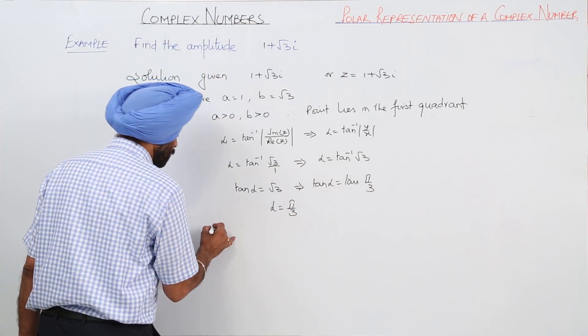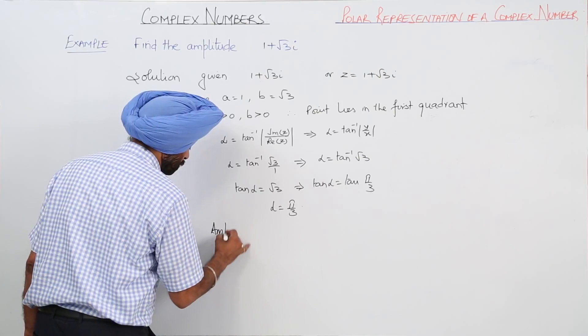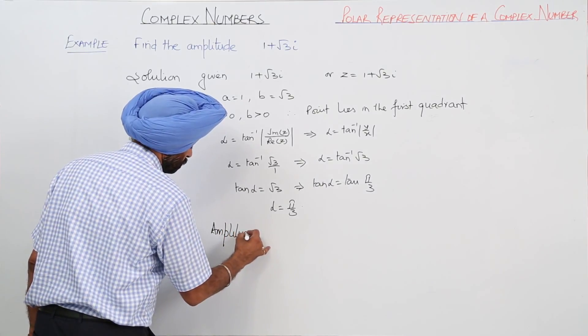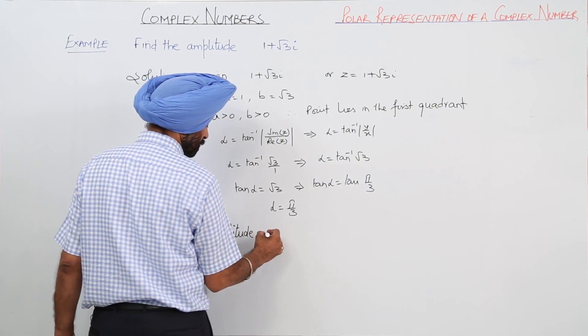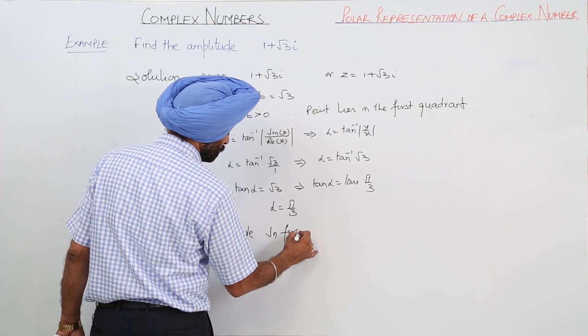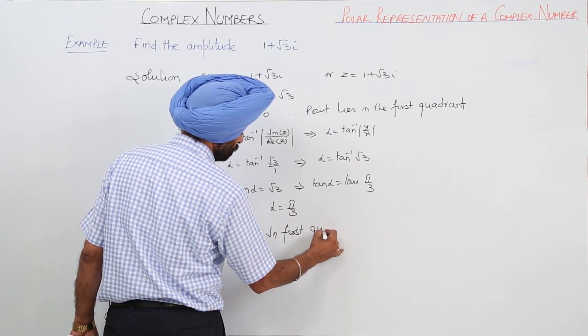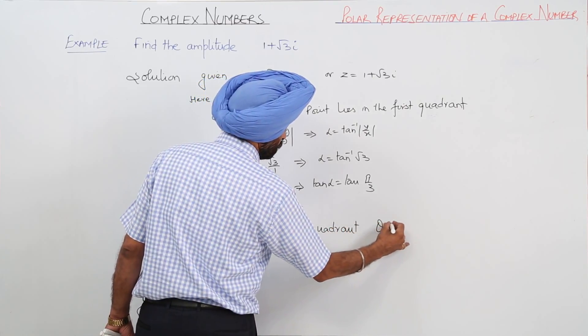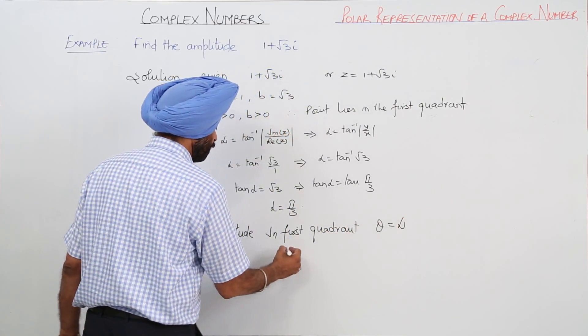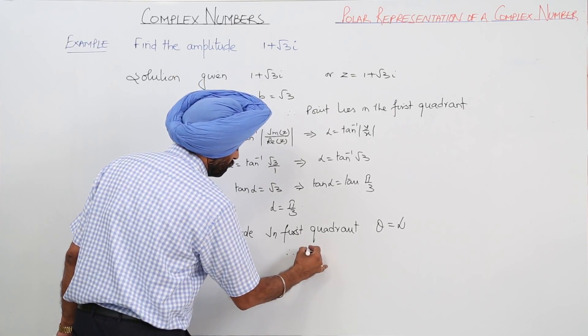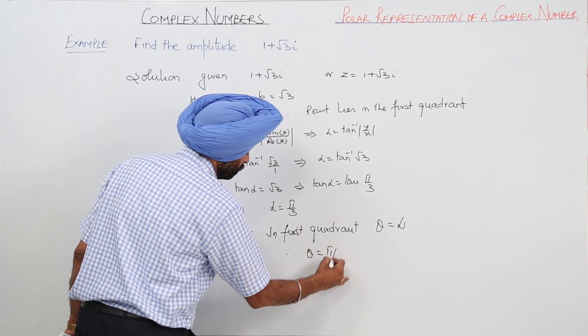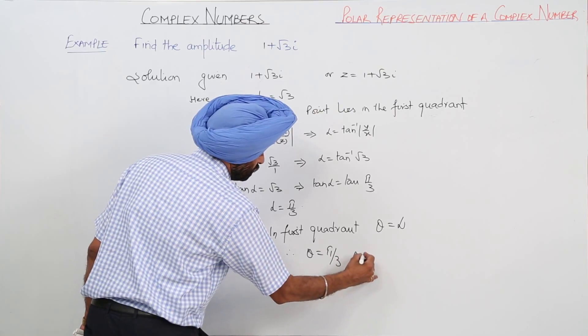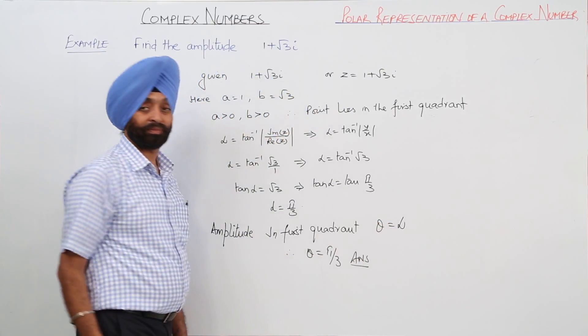Okay, now amplitude in the first quadrant: theta equals alpha. Therefore theta equals pi by 3. Answer.